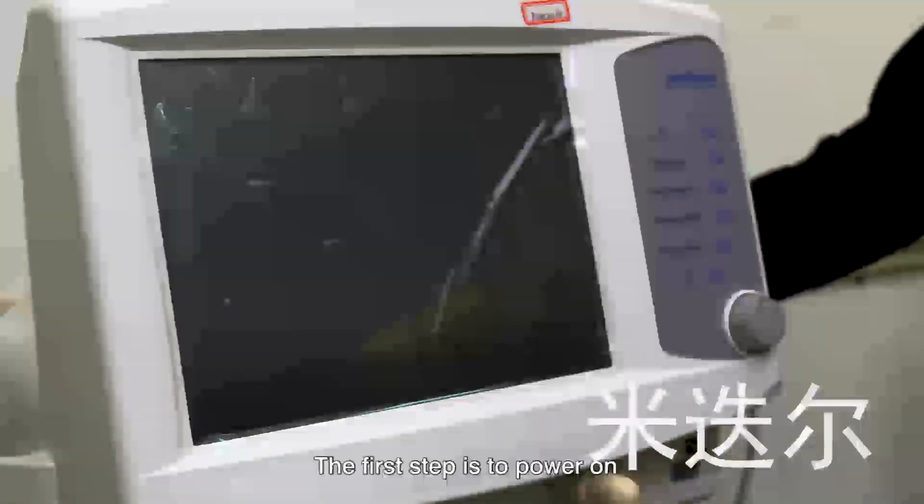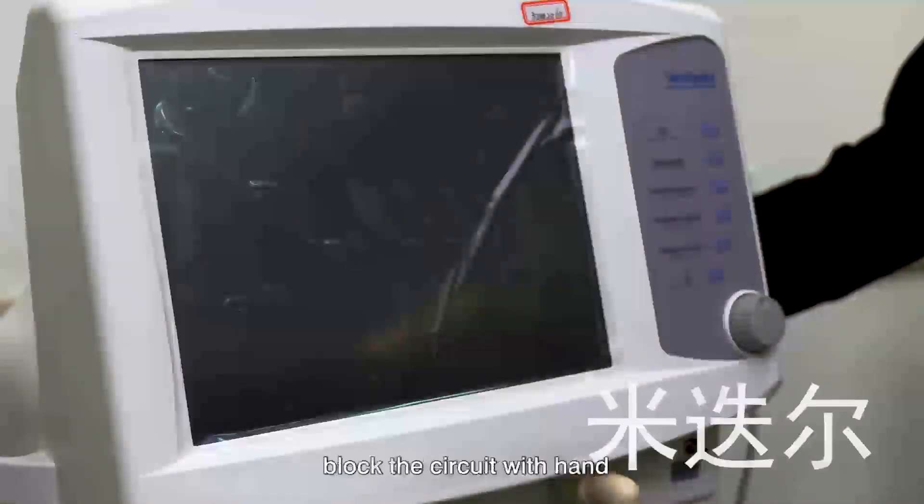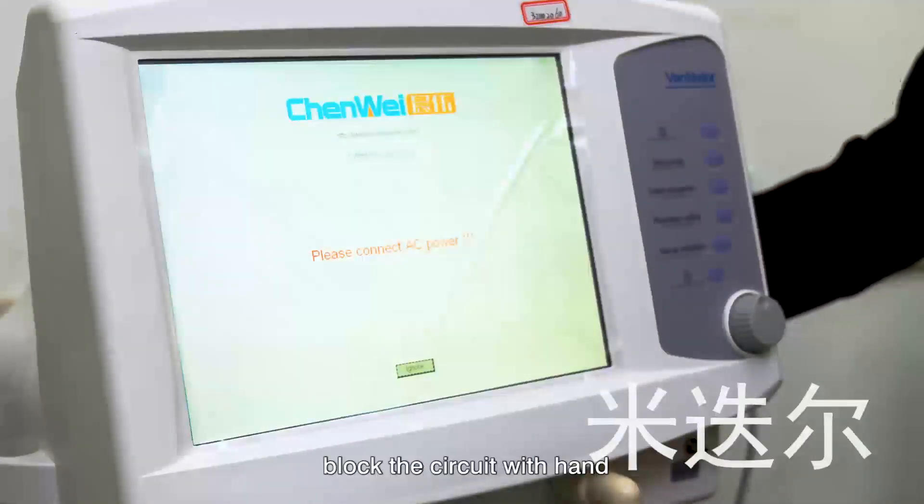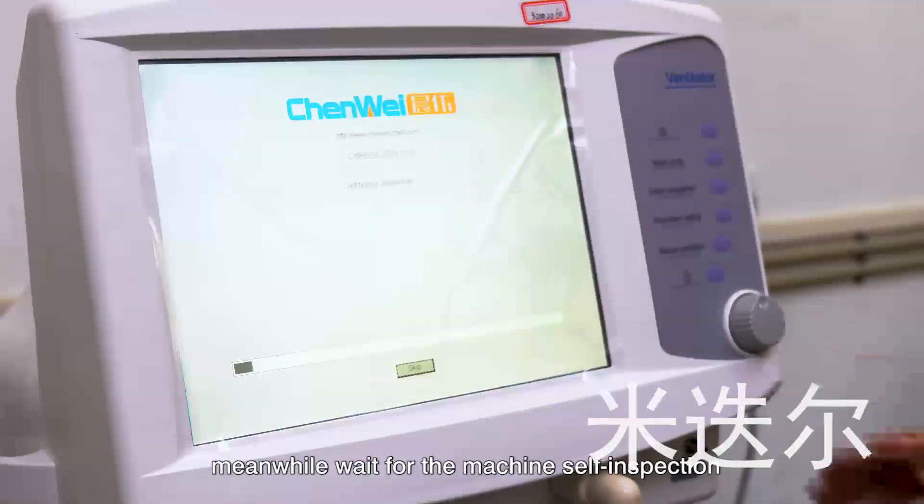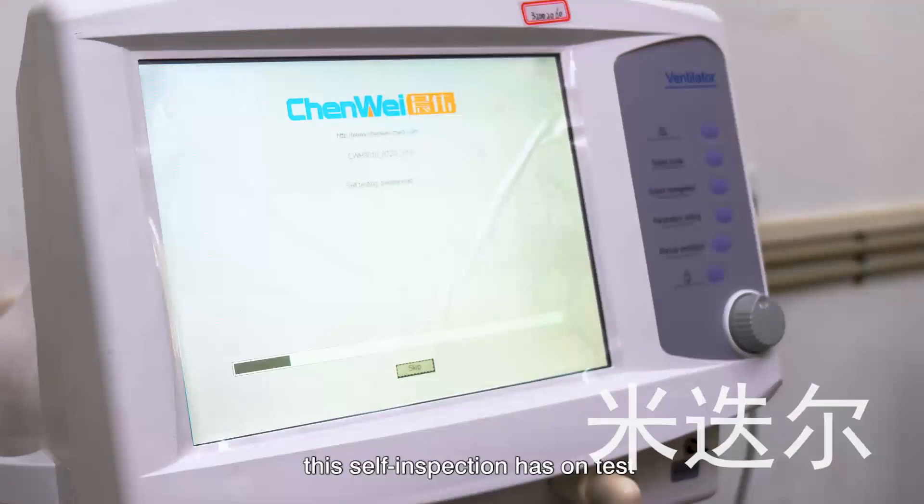The first step is to power on. Block the circuit with hand. Meanwhile, wait for the machine's self-inspection. This self-inspection has one test, the sensor detection.